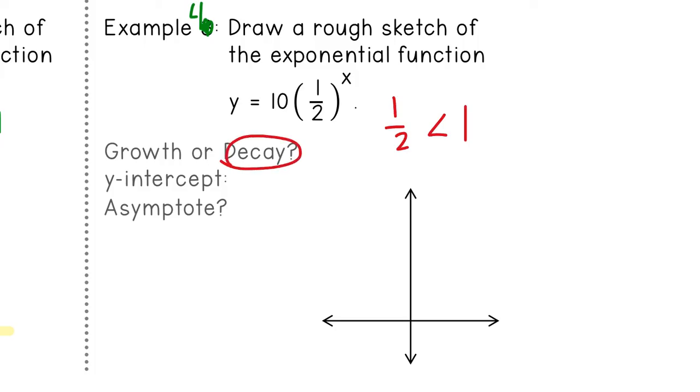It's going to go down. The y-intercept is always the first number that you see outside of the parentheses. So our y-intercept is ten. And then our asymptote is always at y equals zero. So here on my graph, x, y. We have to make sure that we get close to y equals zero. That we go through ten on the y-axis. And that we're going down. So I'm going to count by two. So let's say two, four, six, eight, ten.